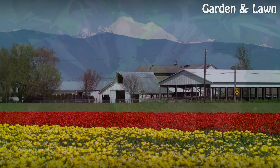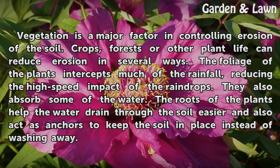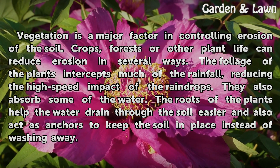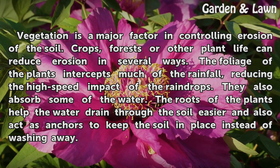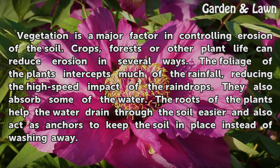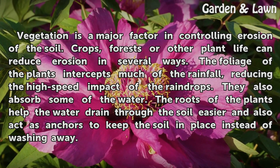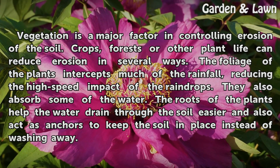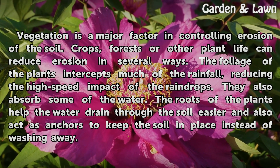Vegetation is a major factor in controlling erosion of the soil. Crops, forests, or other plant life can reduce erosion in several ways. The foliage of the plants intercepts much of the rainfall, reducing the high speed impact of the raindrops. They also absorb some of the water. The roots of the plants help the water drain through the soil more easily and also act as anchors to keep the soil in place instead of washing away.